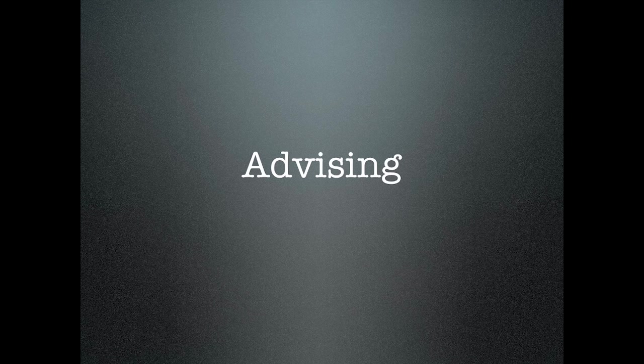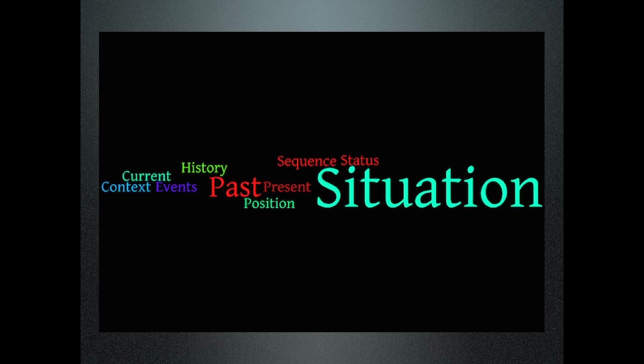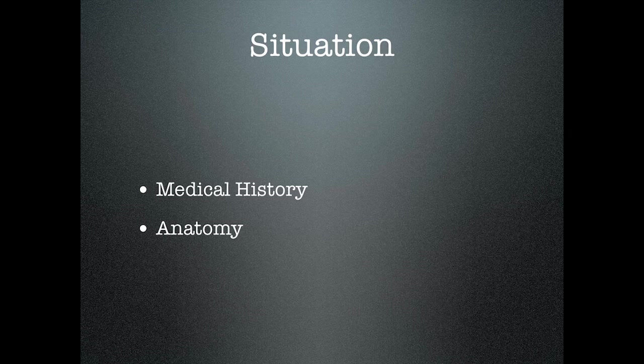Our topic today is on advising. When we think of the advising process, we start with a concept called current situation — what's going on now. That includes a lot of things such as the context, current medical history, what happened in the past, what's going on in the present. Two key ones are the medical history and the anatomy.